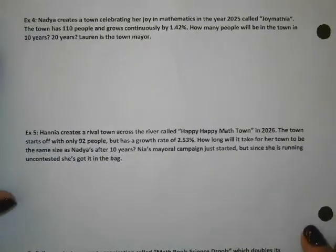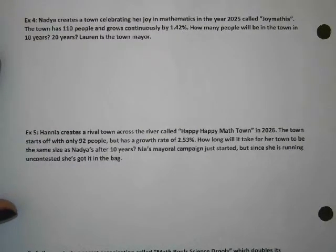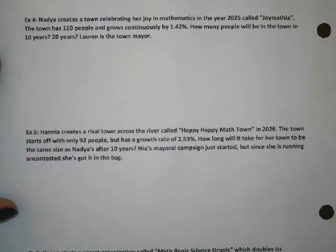All right, so example four. Nadia creates a town celebrating her joy in mathematics in the year 2025 called Joy Mafia. Okay. The town has 110 people. Oh my God! Can I just say something real quick? I did nothing, but I literally did not turn around. You didn't see that? Oh my God, I was featured on the nothing. You were featured.